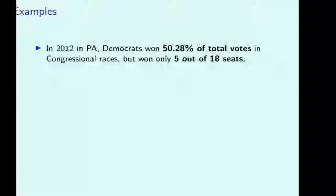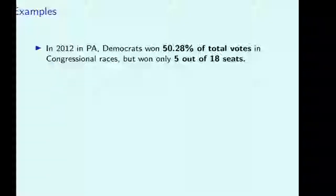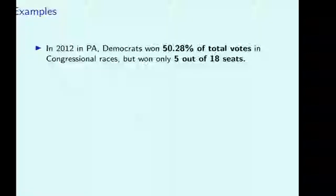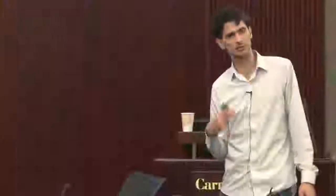In Pennsylvania in 2012, Democrats won a strict majority of the vote, but out of those 18 seats, they won only five — the Republicans got the other 13 seats with a minority of the vote. This has been a remarkably stable result: every election since this map after 2010 was implemented, there have been exactly five Democrat seats and 13 Republican seats, until the recent Conor Lamb special election.